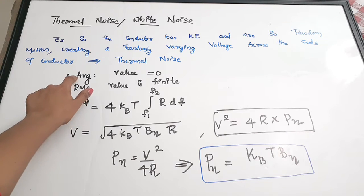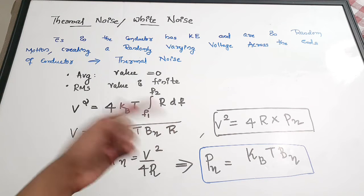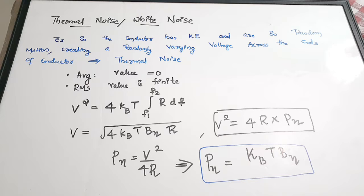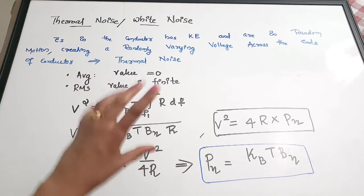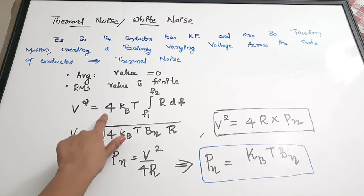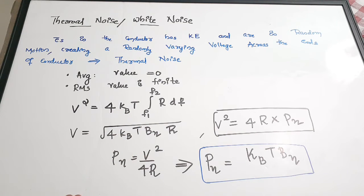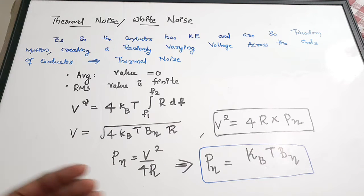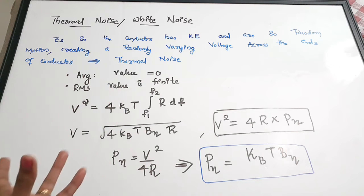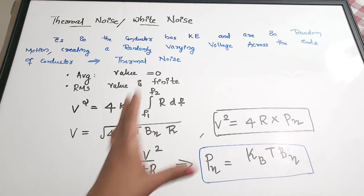If you take the average value of this generated voltage you will get zero, but the RMS value is a finite value. The equation for the RMS voltage is: V² = 4·KB·T·∫(F1 to F2) R·dF, where KB is Boltzmann's constant, T is temperature in Kelvin, and F1 and F2 are the lower and upper frequency limits of the system bandwidth.